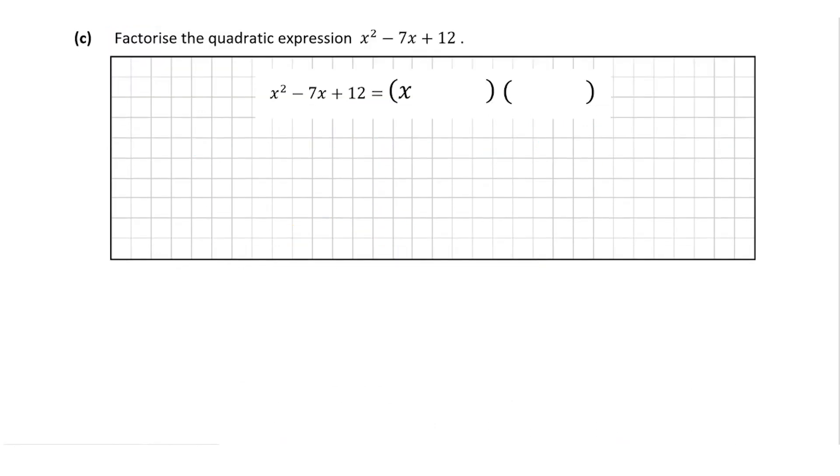Now the final part of this question is a quadratic expression. So we're asked to factorize the quadratic expression x squared minus 7x plus 12. So when I'm given a quadratic expression and I'm asked to factorize it, the first thing that I'm going to do is find the factors of 12. So 12, we have 12 times 1, we have 6 times 2 and we have 3 times 4. We need to pick one of these pairs that's going to add up together to give us minus 7.